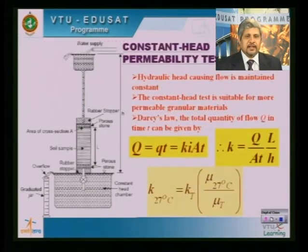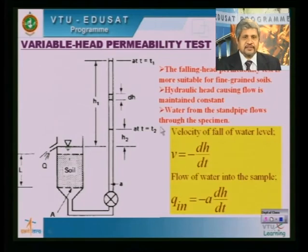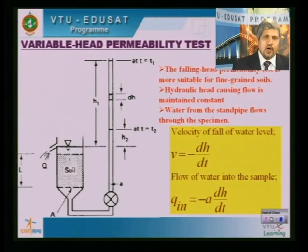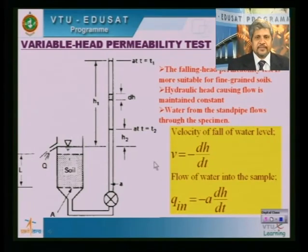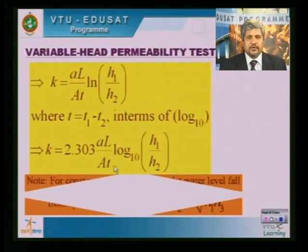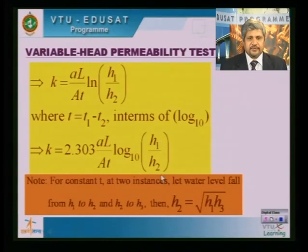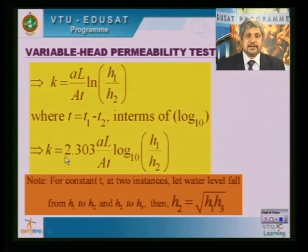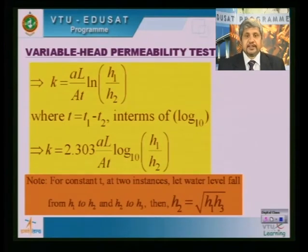Once steady state is ensured, the experiment is conducted for different time intervals. I compute H1, H2, then H2, H3, then H3, H4, H5, H6, and so on, with corresponding times T1, T2, T3, T4. For each pair of heads with the corresponding T, I compute K1, K2, K3, K4, and so on. The average of those coefficients of permeability gives the result, and as in the constant head test, I normalize to 20°C using the same viscosity ratio correction.